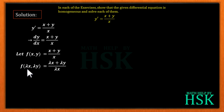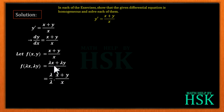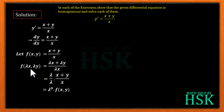Next, we calculate f(λx, λy) by replacing x with λx and y with λy. We get (λx + λy)/(λx). We can take λ common from both numerator and denominator, and on solving, this becomes λ⁰ times f(x, y), which can be written as f(x, y).